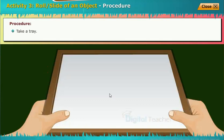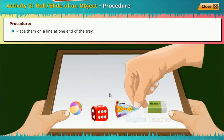Take a tray. Take a small plastic ball, dice, cone and an eraser. Place them on a line at one end of the tray.